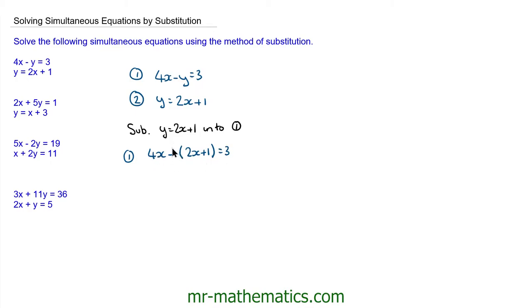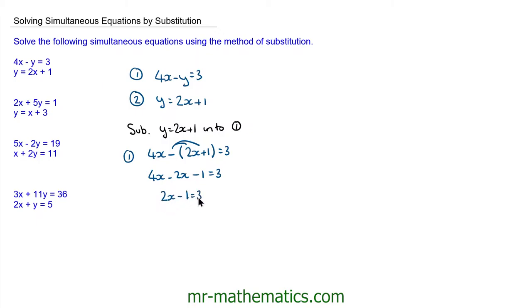The next thing I'm going to do is expand this bracket, because we now have one equation with one unknown. So we have 4x minus 2x minus 1 is equal to 3. We can tidy this up: so we have 2x minus 1 is equal to 3. We'll add 1 to both sides, so 2x is equal to 4. And then we'll divide both sides by 2, so x is equal to 2.